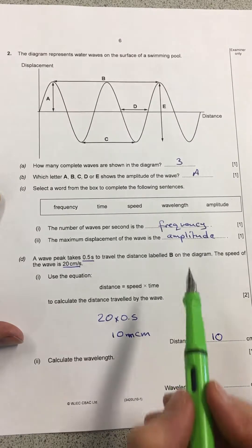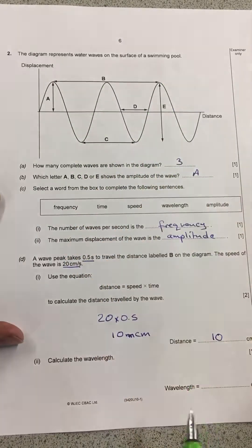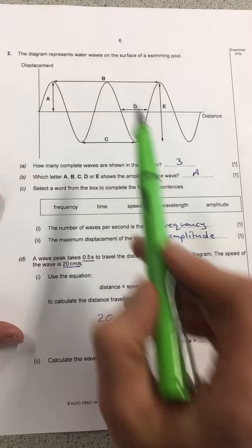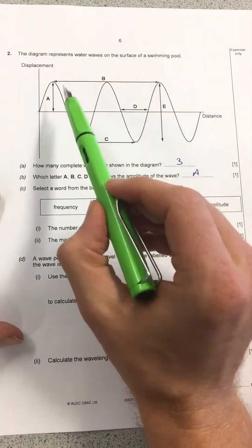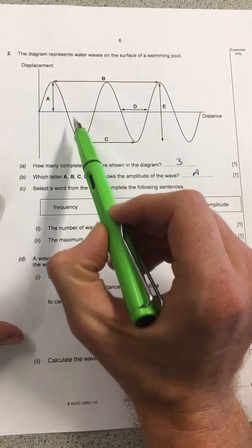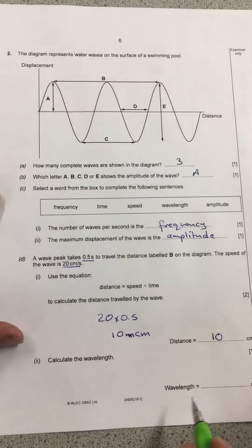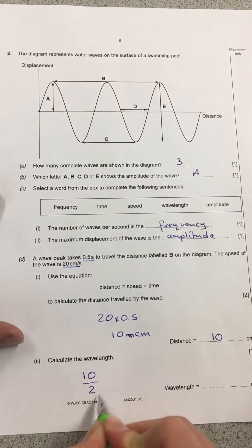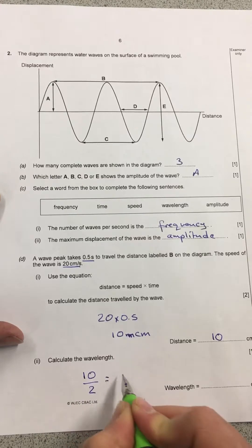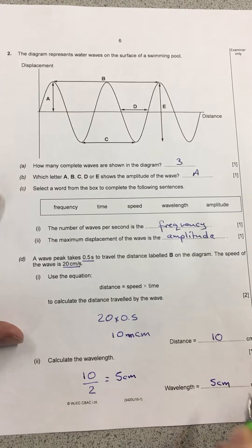They've told us that the wave is traveling from here to here in this question. And that distance we've just worked out is 10 centimeters. Now if I count how many waves I've got, I've got one wave, two waves inside that 10 centimeters. So each wave, that's going to be two waves inside my 10, so each wave must be five centimeters long.